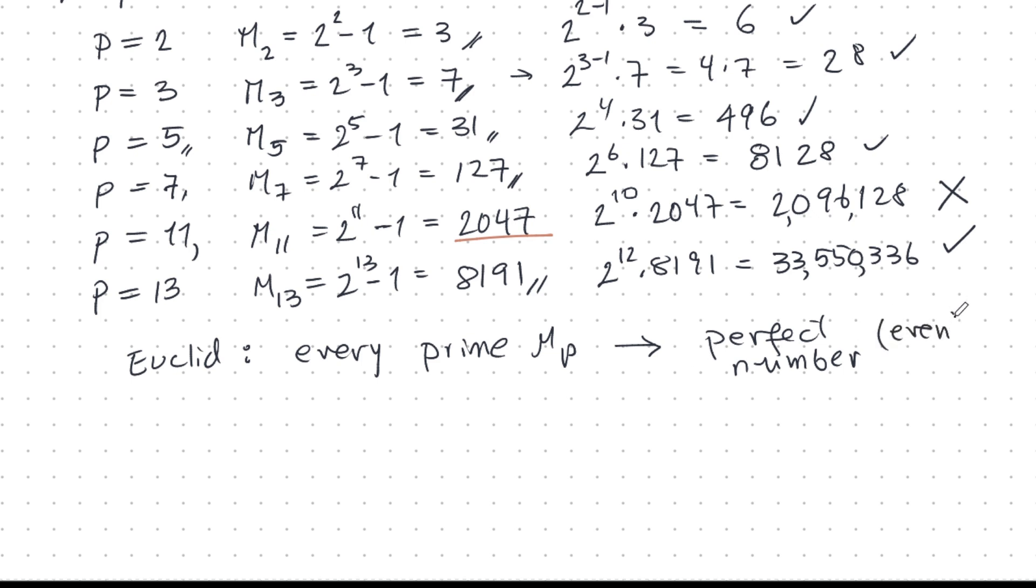And this perfect number is even. It's always even because of these powers of 2. But we have, in more recent centuries, another result that every even perfect number is of the form 2 power p minus 1 times Mp, where Mp is prime. And so it goes both ways. Now we know the two imply each other. They're equivalent. Whenever you have a Mersenne prime, you have a perfect number. Whenever you have an even perfect number, you have a Mersenne prime.